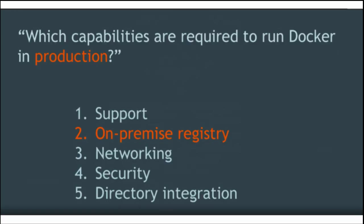One might say there is an on-premise registry — there's the official open source registry image you can install in your organization. But how come this exact request is second in the list? The answer is that the open source registry does not deliver. It's very primitive, very basic, doesn't have any authentication, doesn't have any security policies. So that's the reason. This number two is actually a request for an operational on-premise registry.